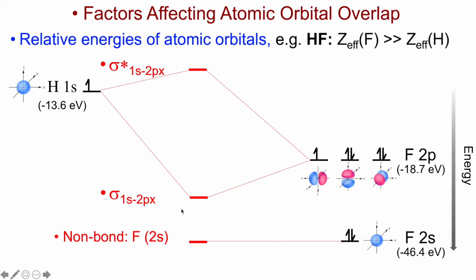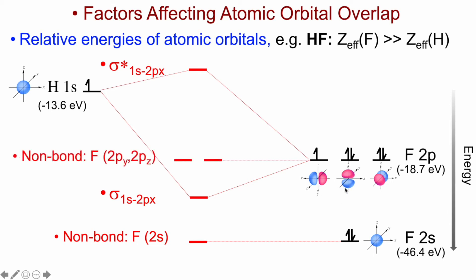The energy of the resultant bonding MO is far closer to the original fluorine 2p orbital than to the constituent hydrogen 1s atomic orbital. The two remaining fluorine 2p orbitals — Pz and Py — have orientations such that any overlap with the hydrogen 1s produces a non-bonding orbital, because any in-phase overlap is equaled by out-of-phase overlap, as discussed previously. The result is two non-bonding orbitals at the same energy as the original fluorine 2p.